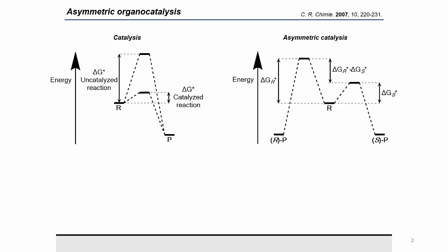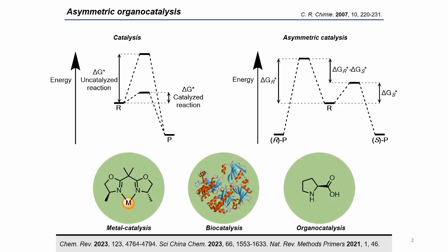In the presence of a chiral catalyst, a prochiral reactant has different energy barriers to the two enantiomers respectively, and the enantioselectivity of the reaction is related to the energy gap between both energy barriers. Asymmetric catalysis can be classified into three main groups.